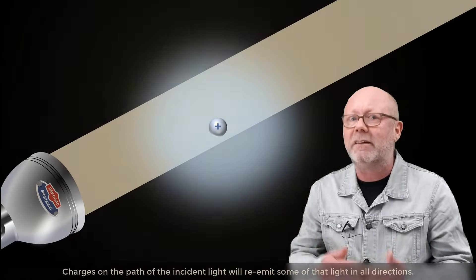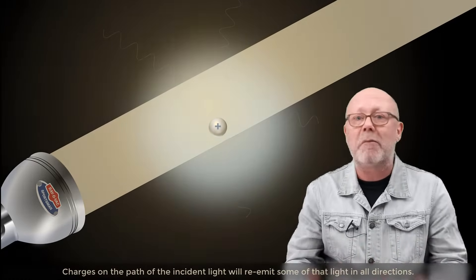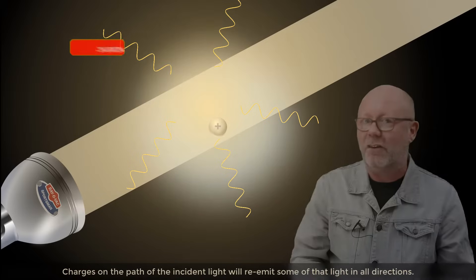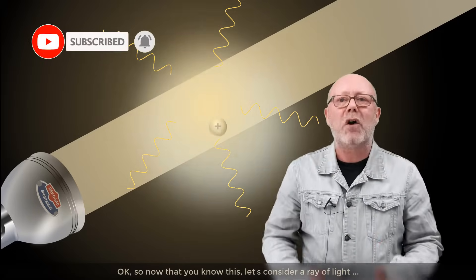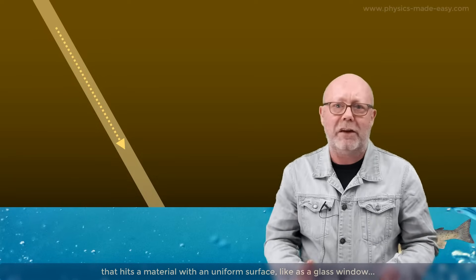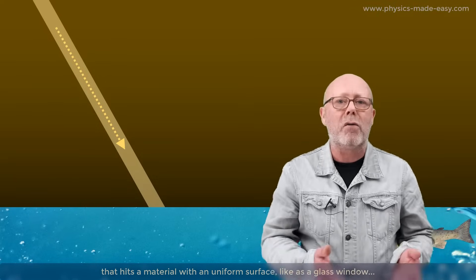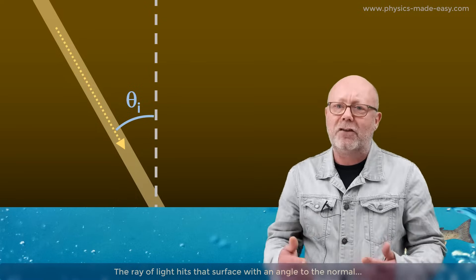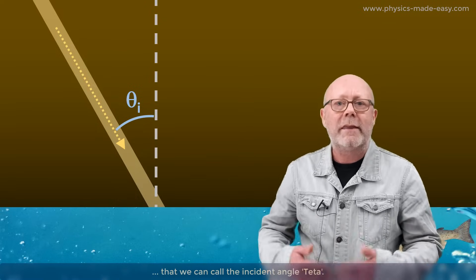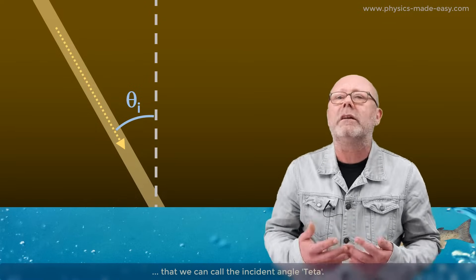Charges on the path of the incident light will re-emit some of that light in all directions. So now that you know this, let's consider a ray of light that hits a material with a uniform surface, like a glass window or the surface of a calm lake. The ray of light hits that surface with an angle to the normal that we can call the incident angle theta.